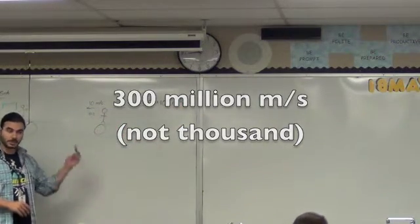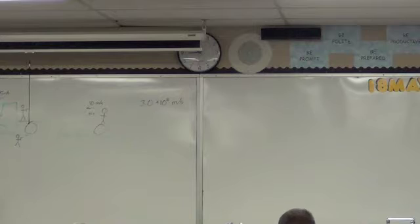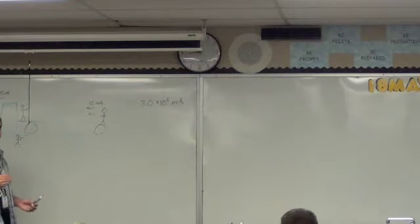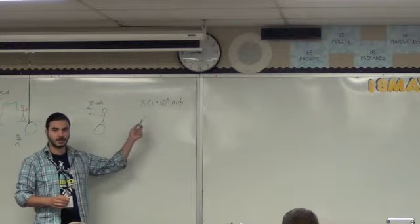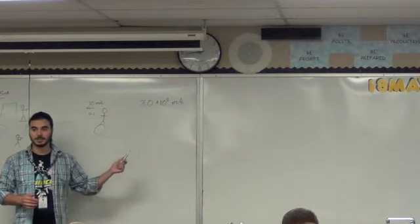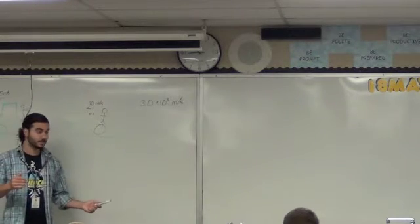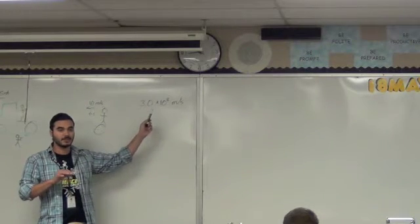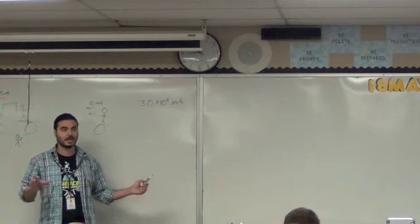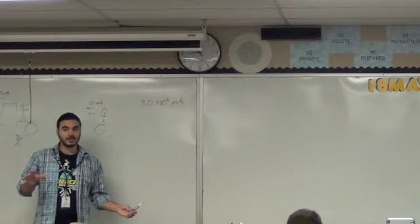But, the thing is, from classic relativity, we know that there's no such thing as absolute velocity, right? Like, you always need to give your velocity relative to something. And, these equations weren't giving the velocity relative to anything. These equations are implying that the speed of light is always this, relative to anything and everything. This is a problem.